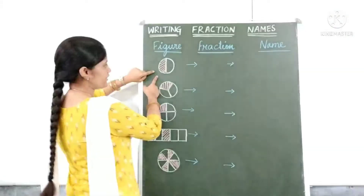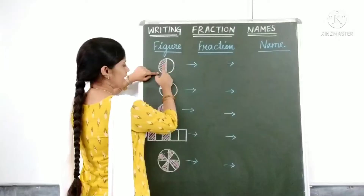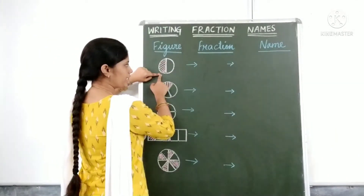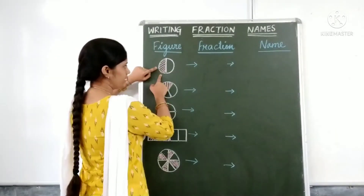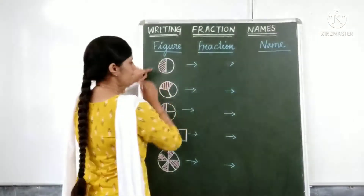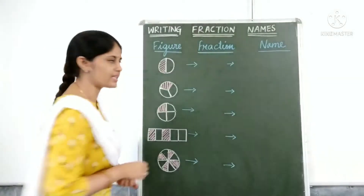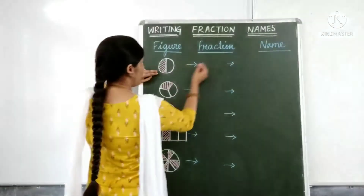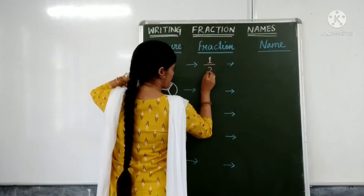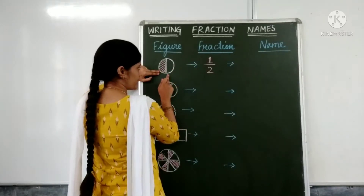Here is the first figure. In this figure we have a circle and it is divided in 2 parts. What is the fraction of the shaded part? One part is shaded out of 2 parts, so the fraction of the shaded part is 1 by 2.